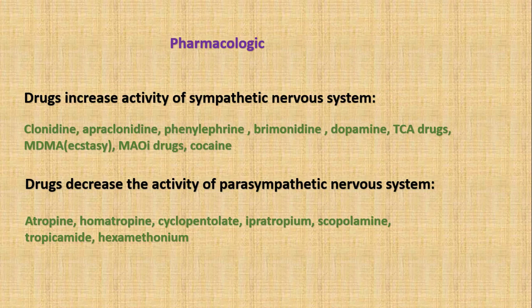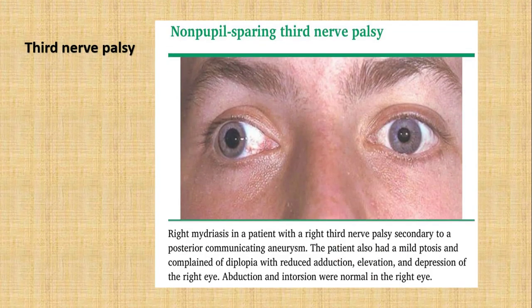Regarding third nerve palsy: mydriasis from isolated third nerve palsy is almost always associated with an extraocular movement deficit and/or ptosis. A completely isolated mydriasis is extremely unlikely to be related to a third nerve palsy. Tonic pupil and pharmacologic mydriasis should be specifically excluded by careful neuropharmacologic evaluation and pharmacologic testing in this setting.